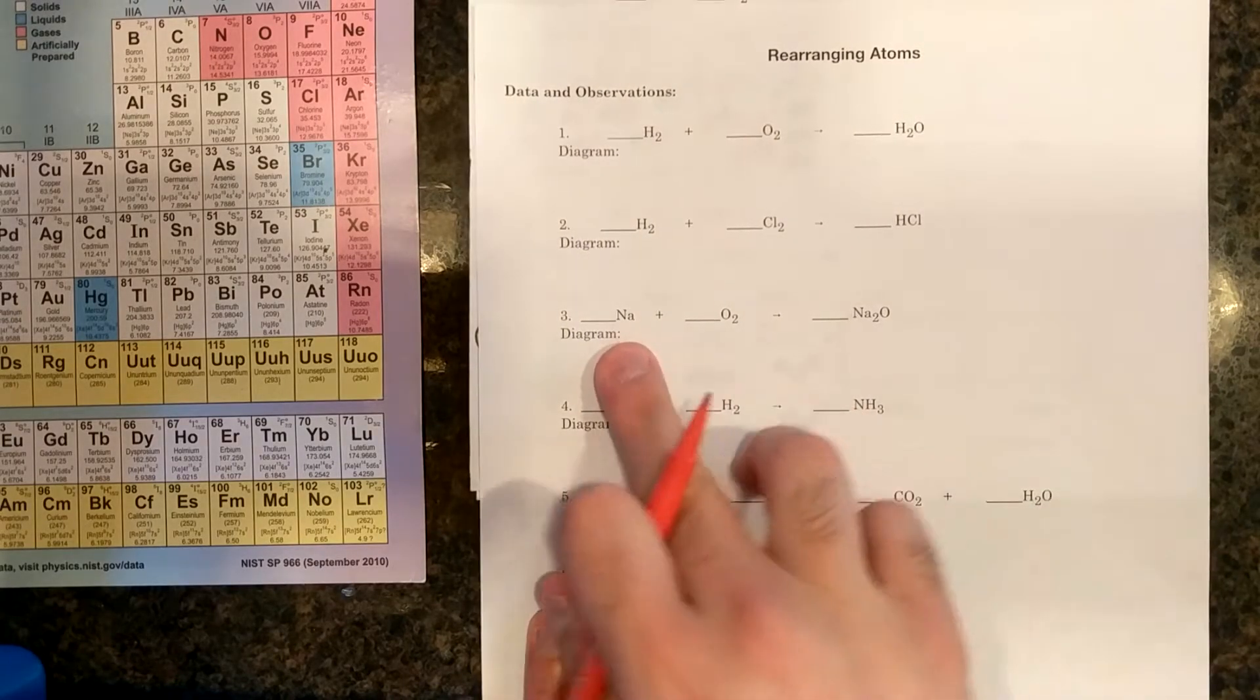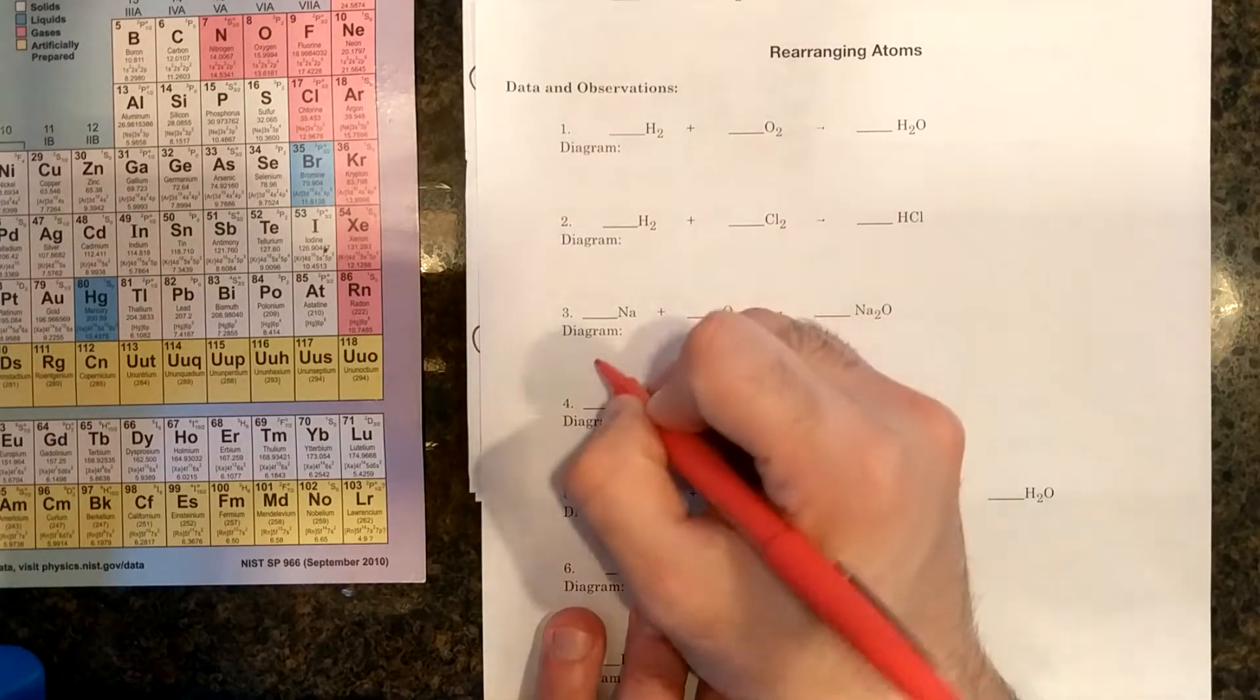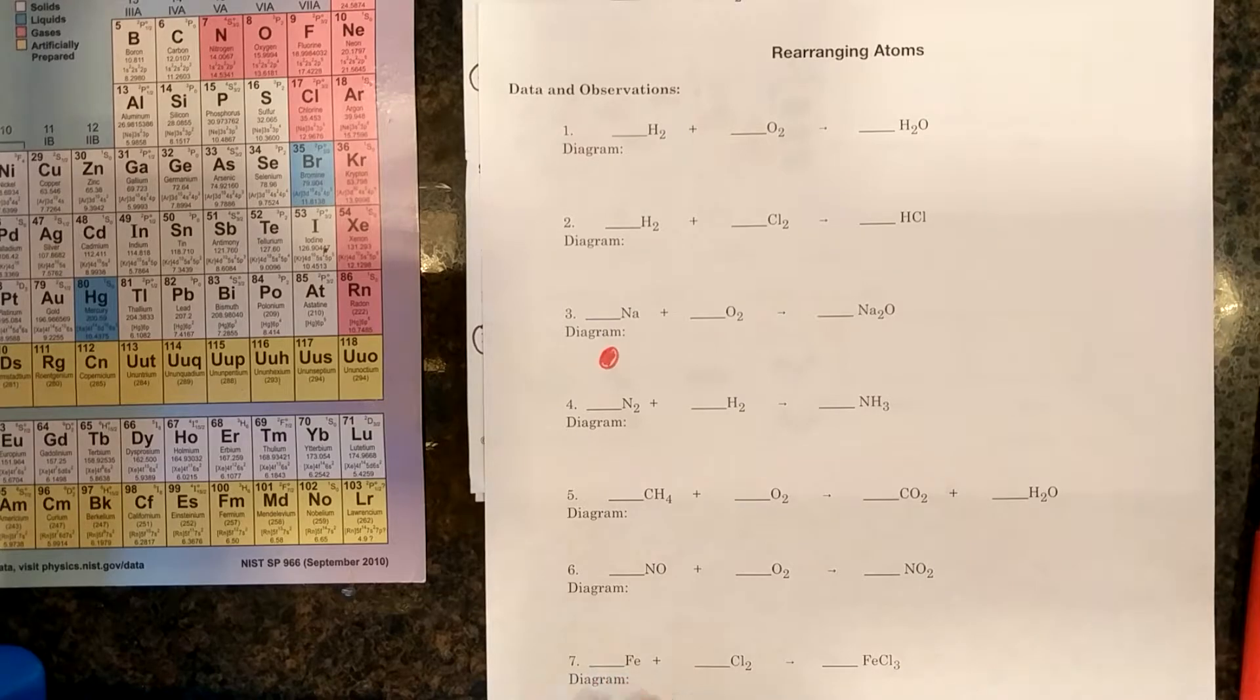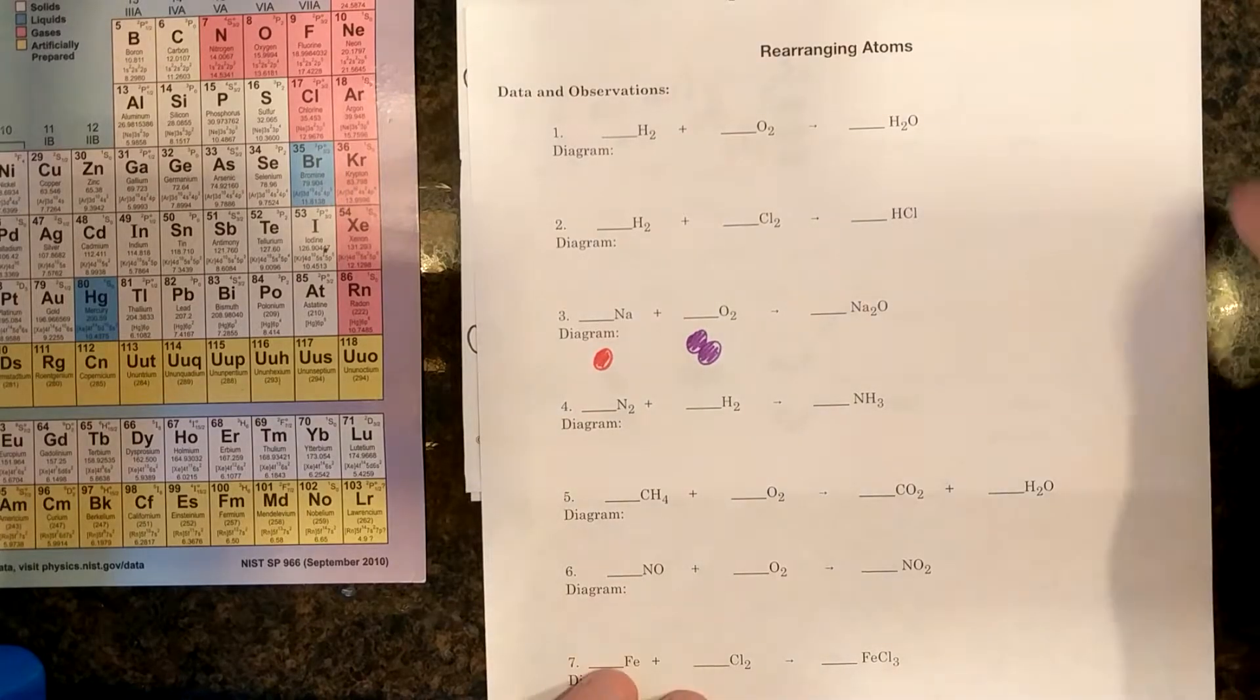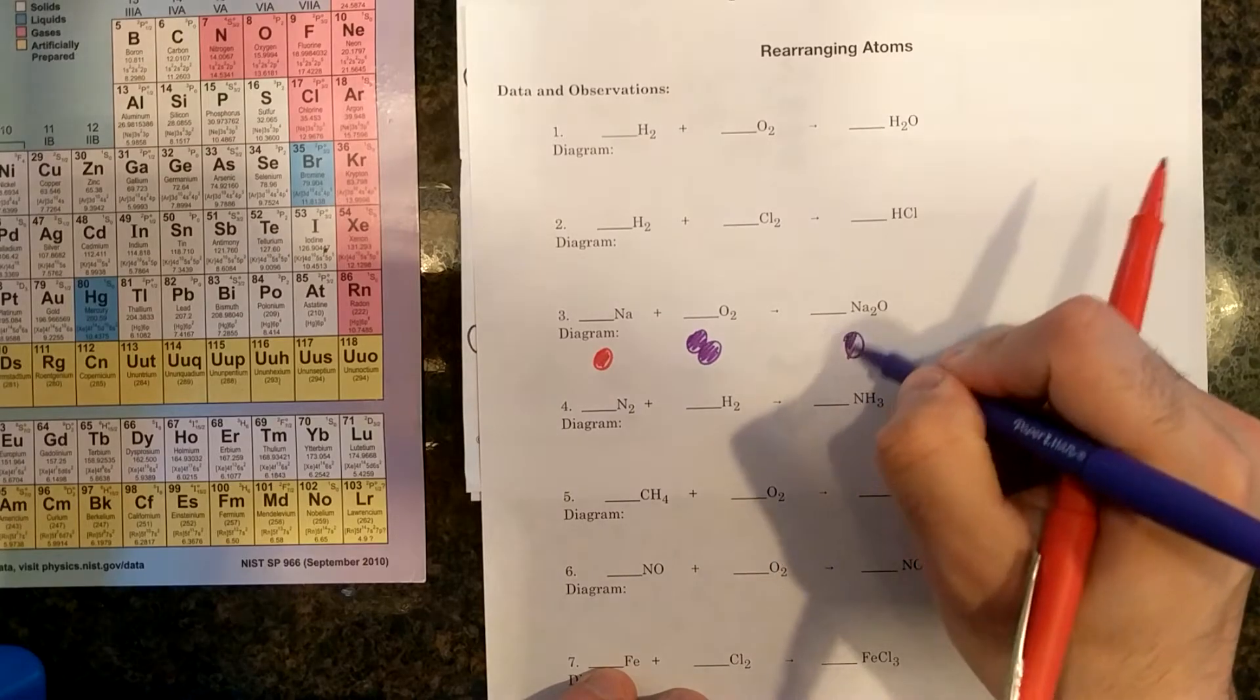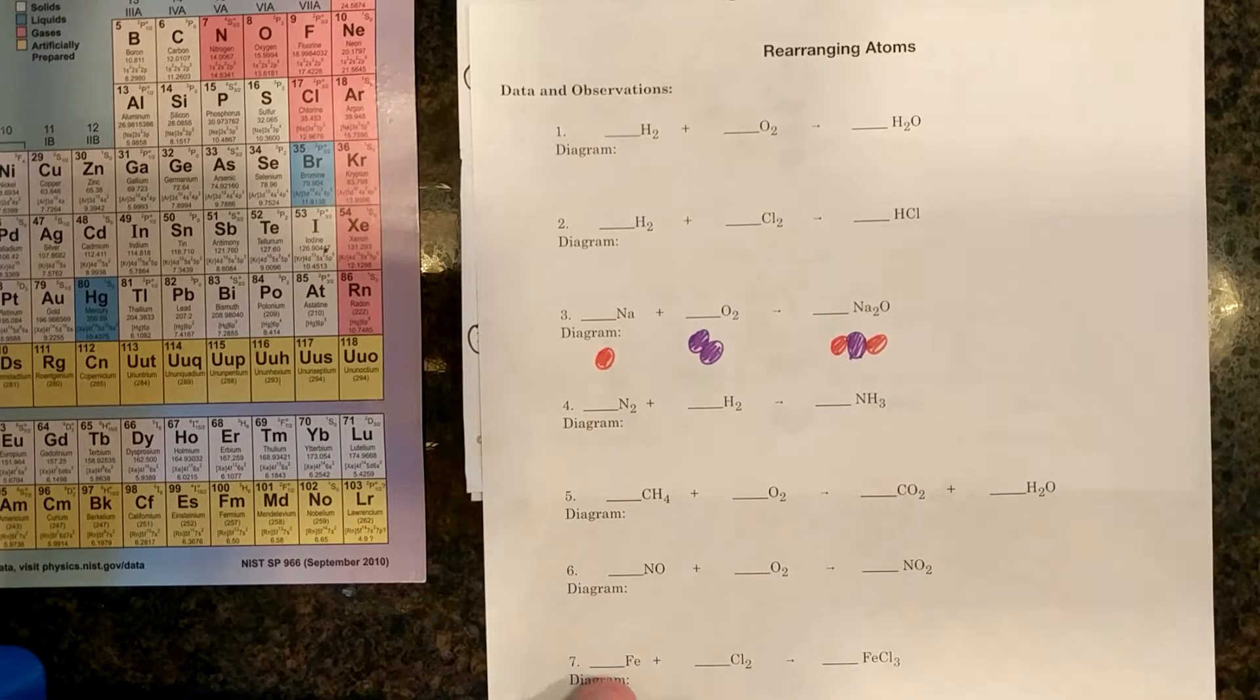So for number three now, I have Na plus O2 gives me Na2O. I'm going to use red for Na and I'm going to use purple for O2 and I'm going to make Na2O. So I need O, one O as a product and two Nas.